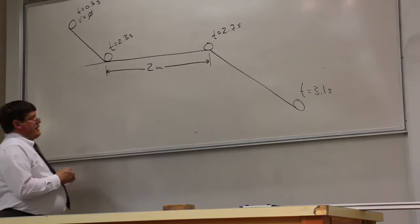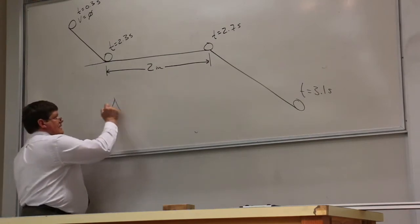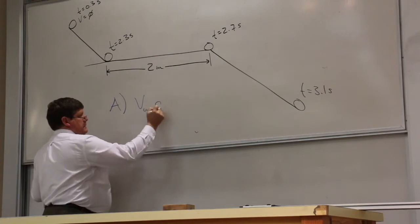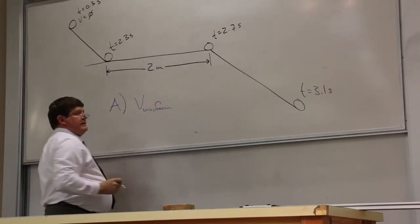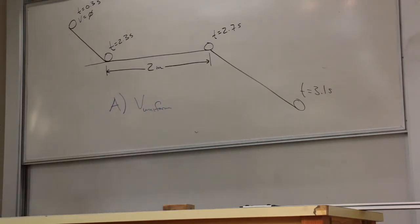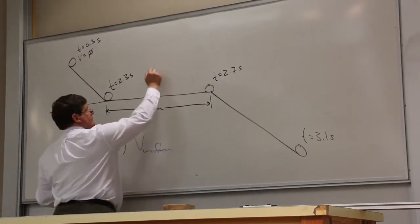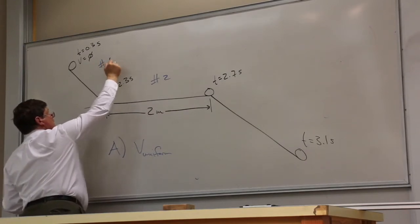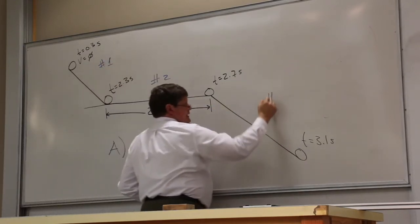Part A of this problem asks you for the uniform velocity on the level section of track. We'll call that track number two, and this would be track number one, and this would be track number three.